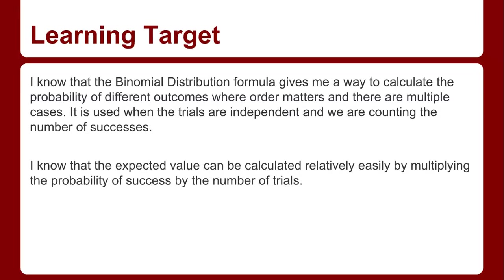The learning target is: I know the binomial distribution formula gives me a way to calculate the probability of different outcomes where order matters and there are multiple cases. With flipping three coins, order matters — it matters where you get the heads. But there are also multiple cases: there's obviously more than one way to flip two heads, more than one way to flip one head.